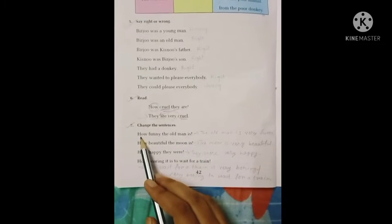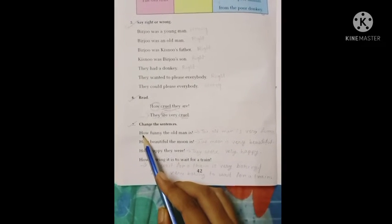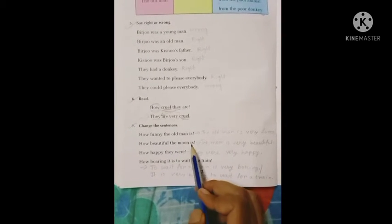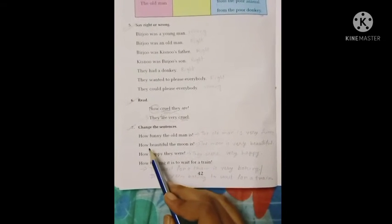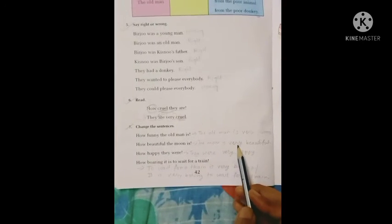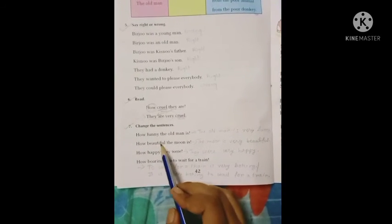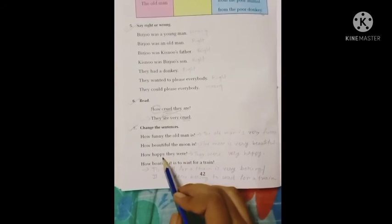Which comes in the place of how, then write the adjective. How beautiful the moon is. Write the subject, the moon, then is, then write very in the place of how, then write the adjective. How happy they were. They were very happy.